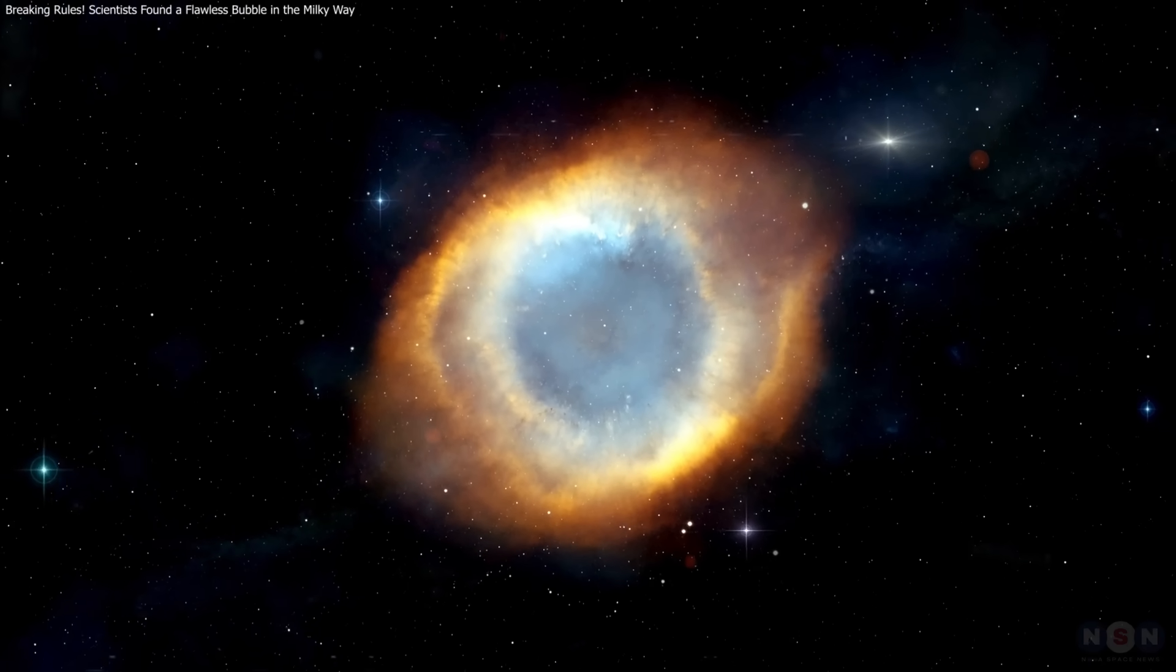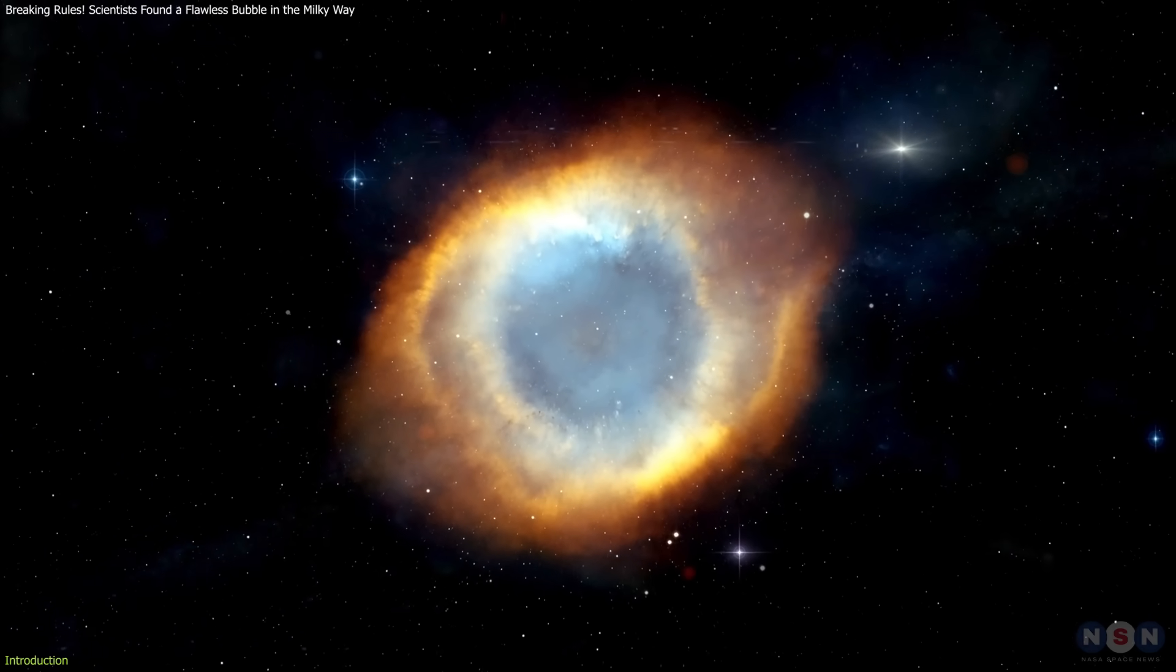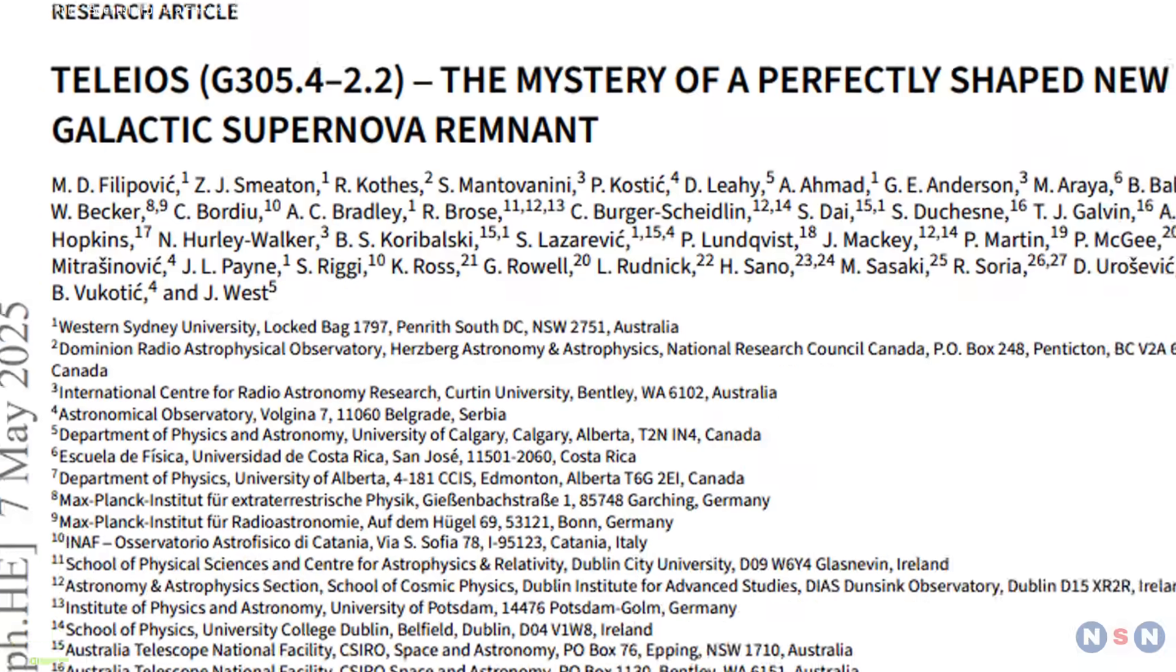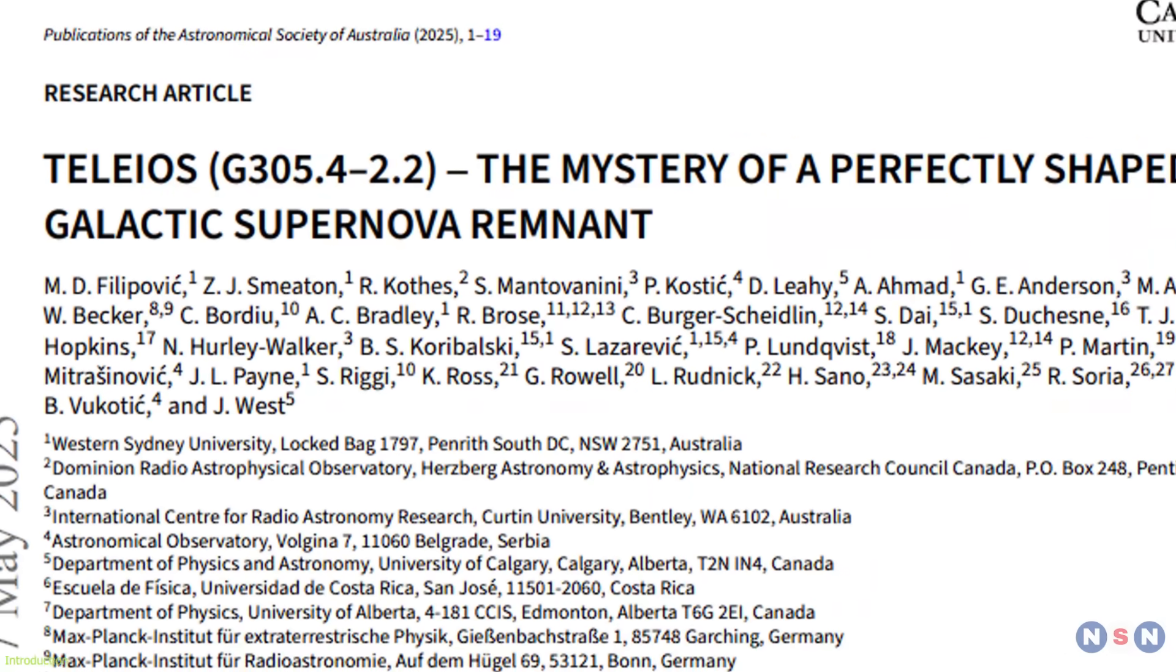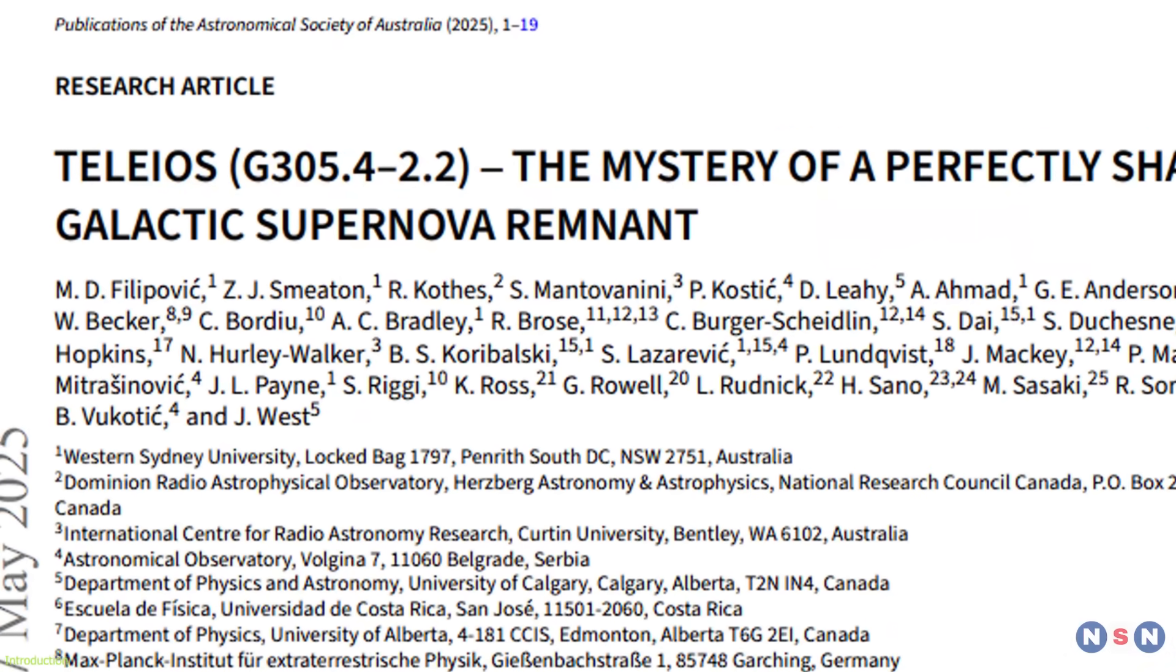Astronomers have spotted a rare, nearly perfect circle in the Milky Way, a supernova remnant named Teleos, meaning perfect in Greek.